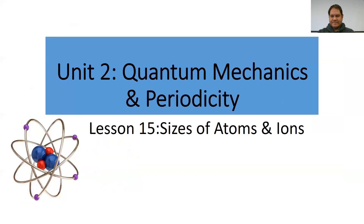Hello everyone, let's get started with today's lesson — it's Lesson 15: The Size of Atoms and Ions. Get out your study guide and turn to Lesson 15. Today we look at one of the first properties of atoms and ions, focusing on Coulomb's law as well as effective nuclear charge. We'll apply those two ideas to atomic size — atomic radius — and the size of ions.